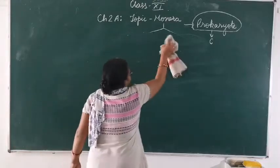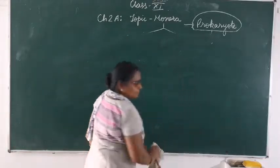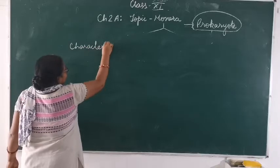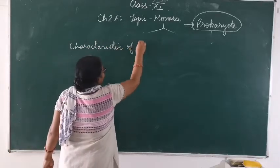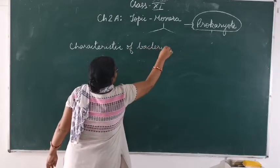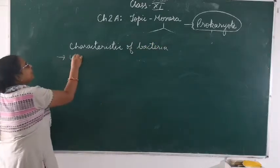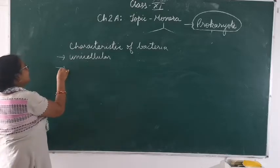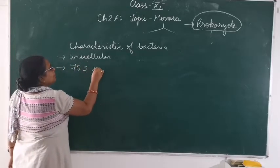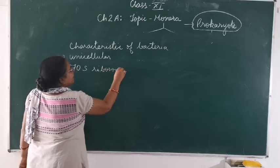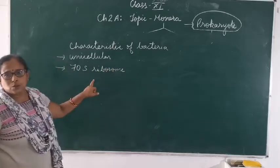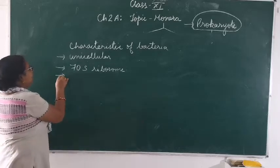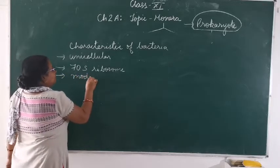Now we are going to discuss about the characteristics of bacteria. In this you will see these bacteria are unicellular — they are composed of single cells. You will get 70S ribosome. As you may have noted in class 9, this ribosome is also known as 40S and 30S. So the ribosome sedimentation value will give 70S.